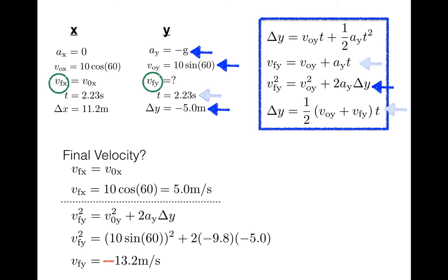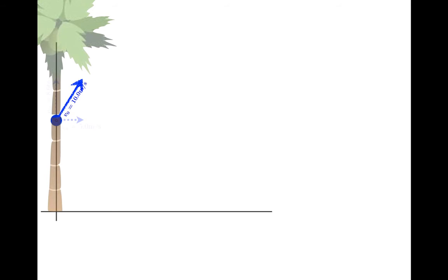Okay, so now that I've found the final velocities in the X and Y directions, I'd like to show you the motion of the ball again to emphasize the significance of these results. So here's the motion of the ball, and here are the final velocity components that we found. vfx is 5 m/s, and vfy is -13.2 m/s.